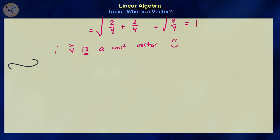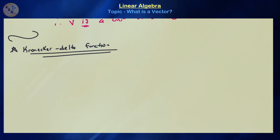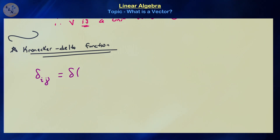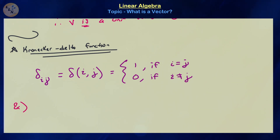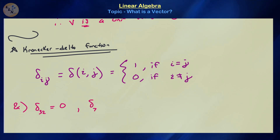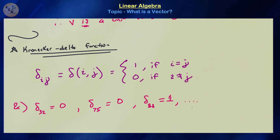Let's introduce the Kronecker delta function, which is a multivariable function that takes values of 1 or 0. We denote it as δᵢⱼ: it equals 1 if i = j, and 0 if i ≠ j. For example, δ₃₂ = 0, δ₇₅ = 0, and δ₈₈ = 1. This is a special function we'll use to shorthand many proofs and calculations later on.